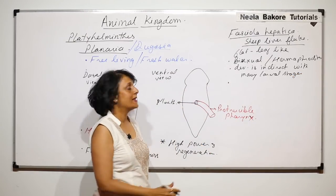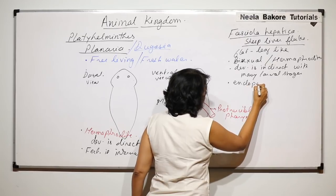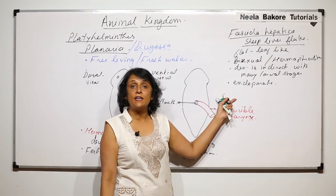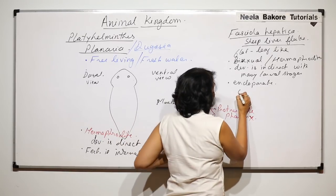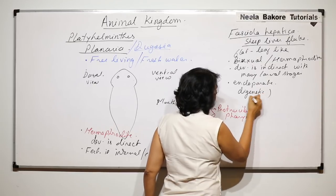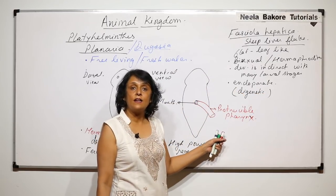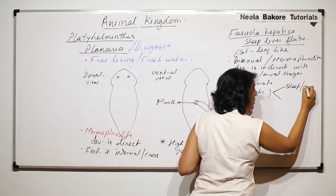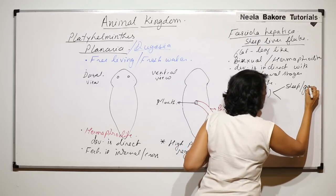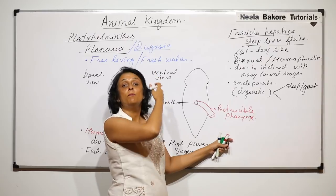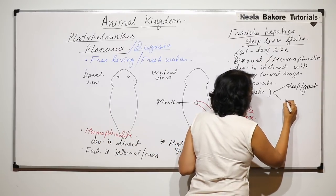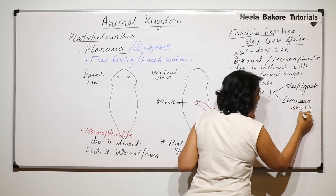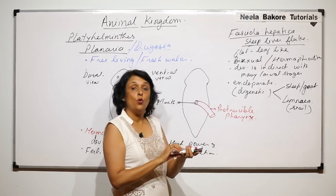It is an endoparasite, meaning it lives or completes some stages of its life cycle in hosts. It is digenetic, meaning the life cycle is completed in two hosts. These two hosts are sheep or goat — which is why it is called the sheep liver fluke — and the second one is a snail named Limnea.